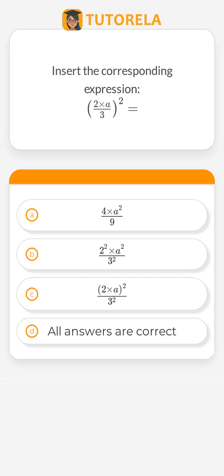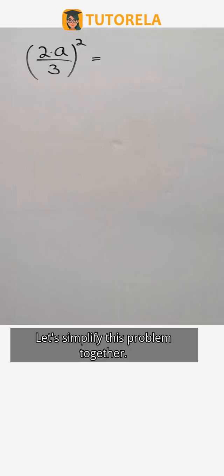Insert the corresponding expression: the quantity 2 multiplied by a divided by 3, all squared, equals. Let's simplify this problem together.